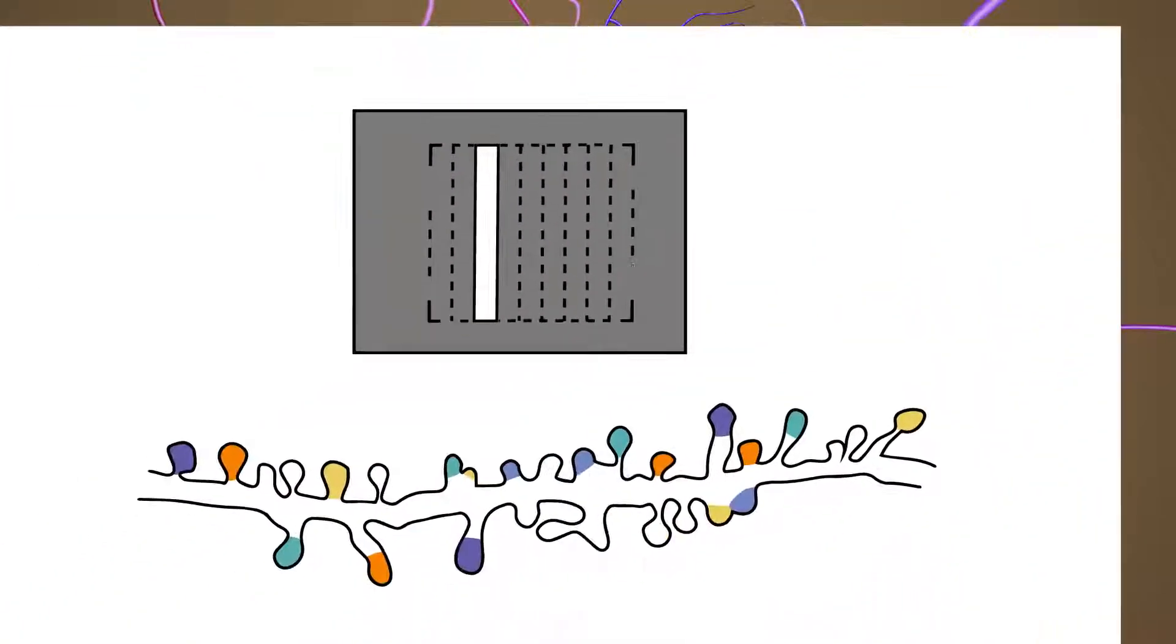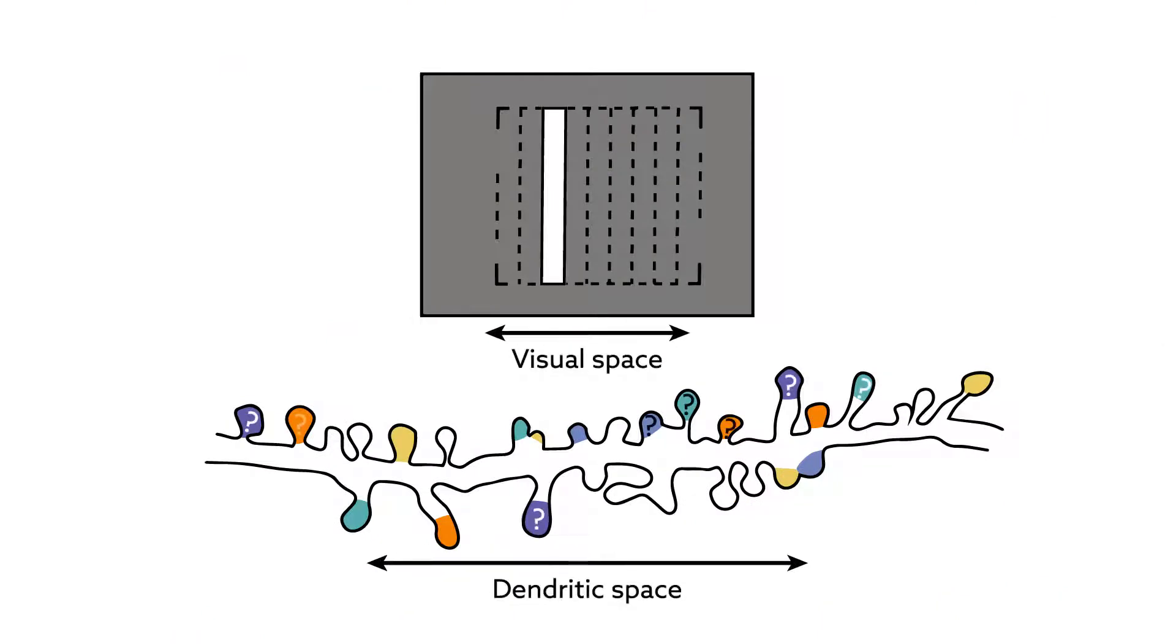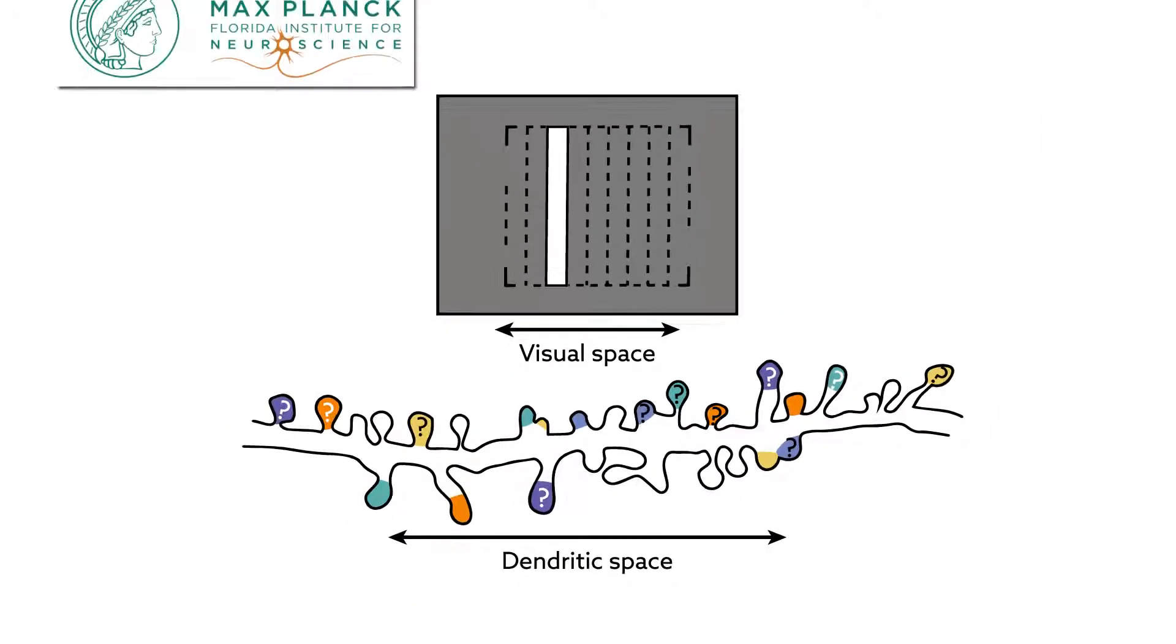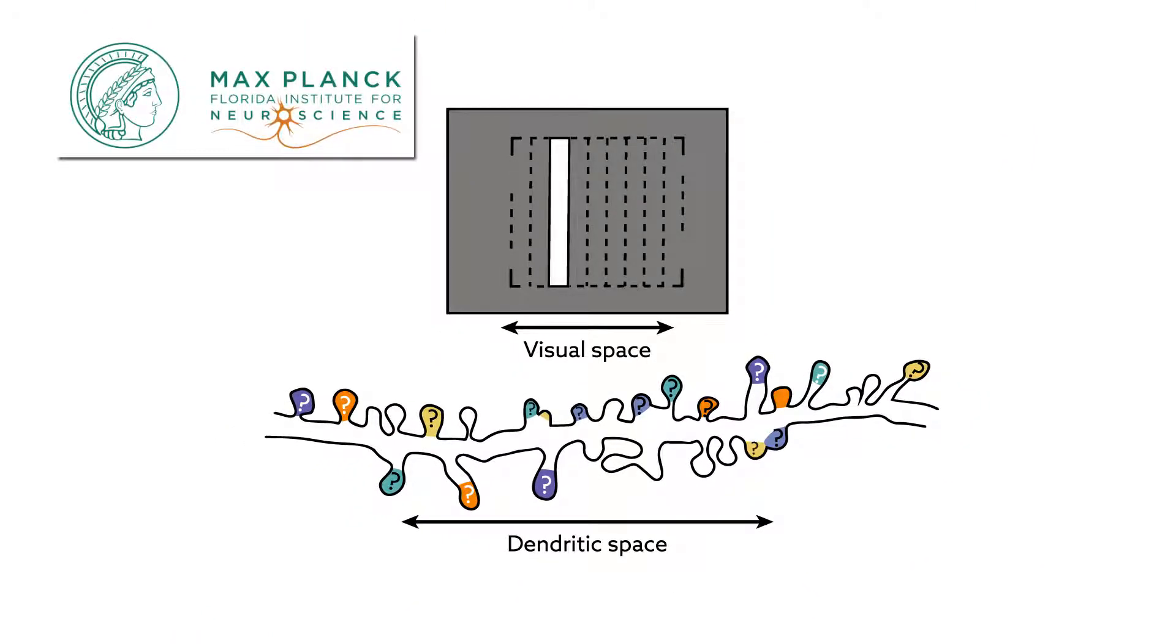One proposed mechanism is spatial clustering of synaptic inputs. Now, researchers from the Max Planck Florida Institute for Neuroscience report that synaptic inputs carrying visual information are clustered at a scale of 5 to 10 microns, sharing functional properties and activity.